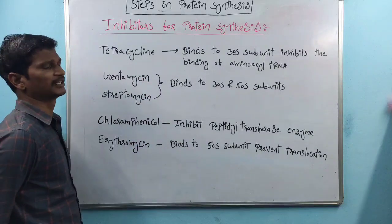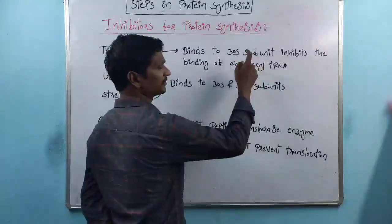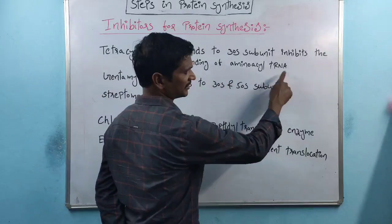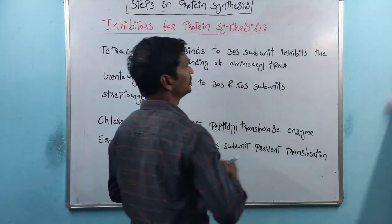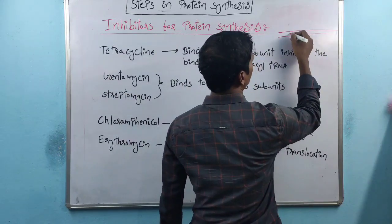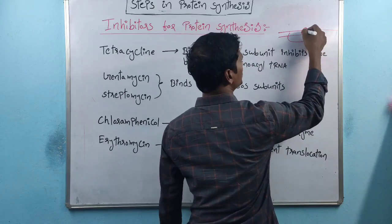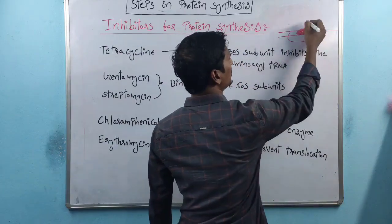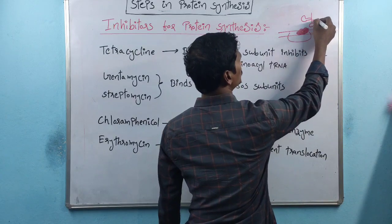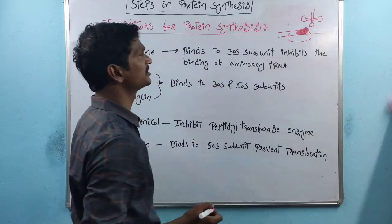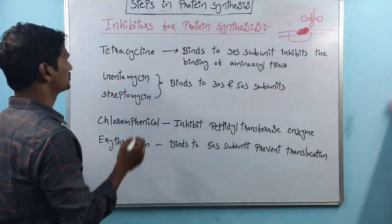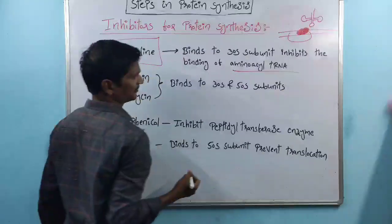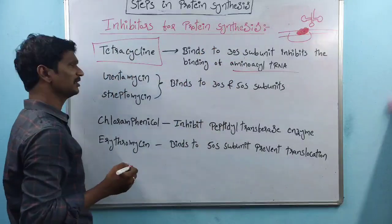One example is tetracycline. Tetracycline binds to the 30S subunit of the ribosome and prevents the binding of aminoacyl-tRNA. Once the antibiotic tetracycline is bound, there is no chance for aminoacyl-tRNA to bind — so tetracycline prevents aminoacyl-tRNA binding at the 30S subunit.